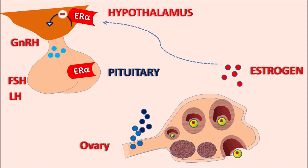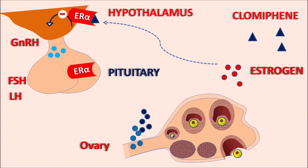When FSH and LH are suppressed by estrogen's negative feedback, follicular growth and ovulation are reduced. Clomiphene acts as an estrogen receptor antagonist at the hypothalamus and anterior pituitary, blocking these estrogen receptors and minimizing the negative feedback mechanism. With this feedback inhibited, gonadotropin hormones are released in greater amounts, stimulating follicular growth and ovulation in the woman.